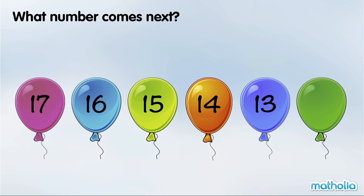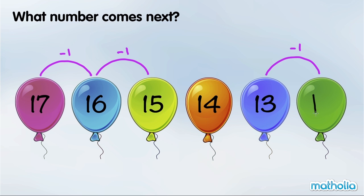What number comes next? 17, minus 1, is 16. 16, minus 1, is 15. The numbers are going down by 1 in each step. 13, minus 1, is 12. The next number is 12.